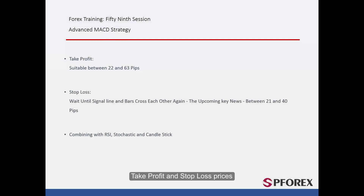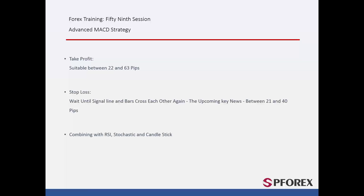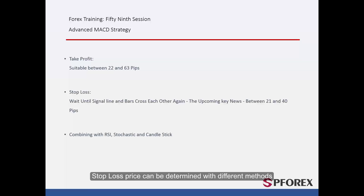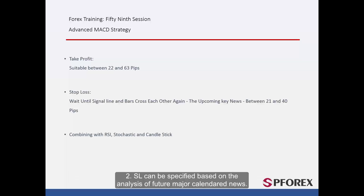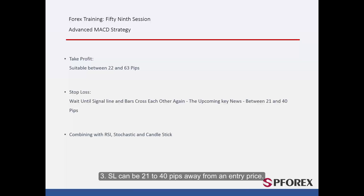Take Profit and Stop Loss Prices: Take Profit value is between 22 and 63 pips based on other confirmations and type of candle pattern on the entry price. Stop loss price can be determined with different methods: (1) SL can be placed on the spot where the signal line passes the bars again; (2) SL can be specified based on the analysis of future major calendared news; (3) SL can be 21 to 40 pips away from an entry price.